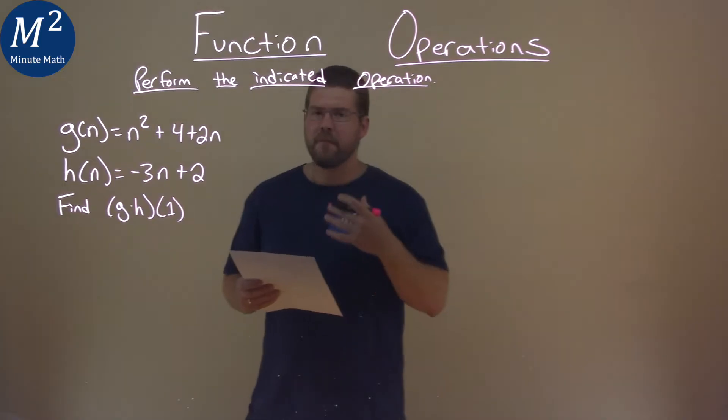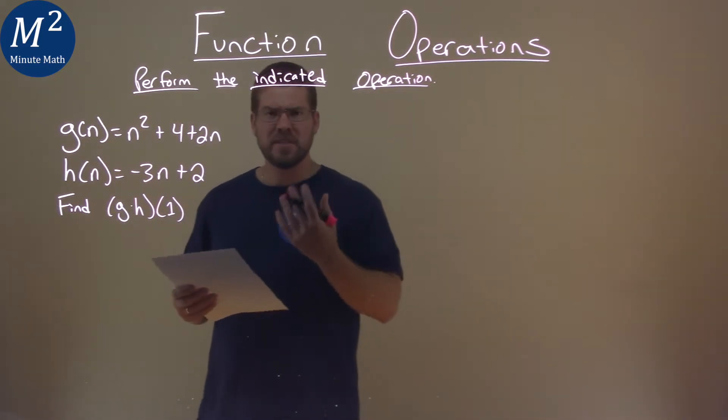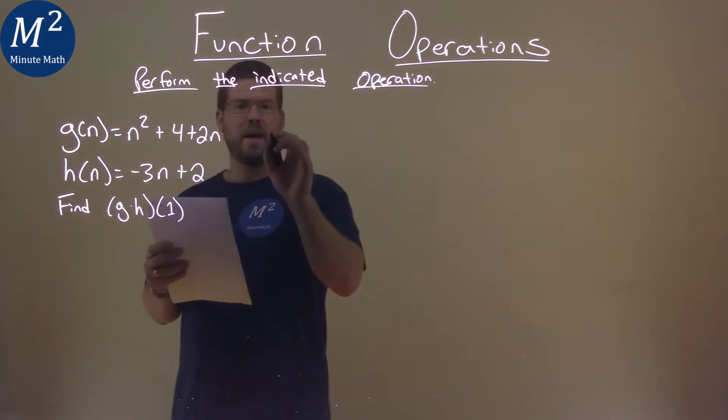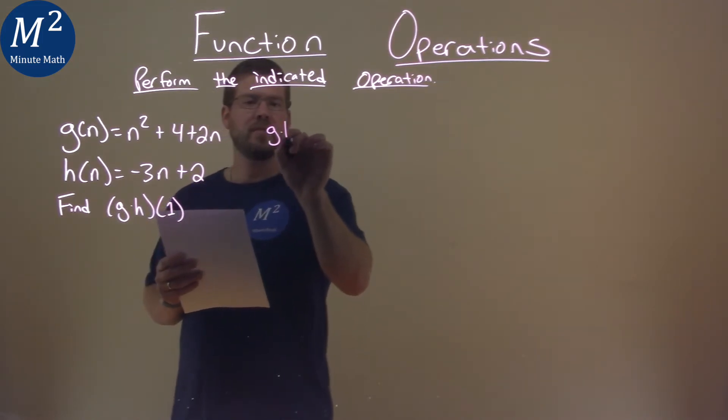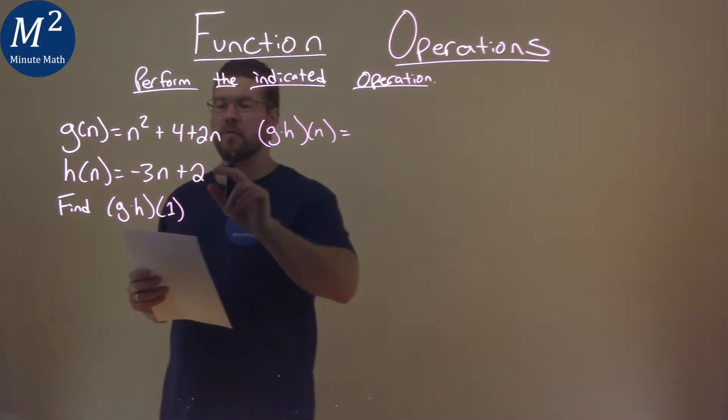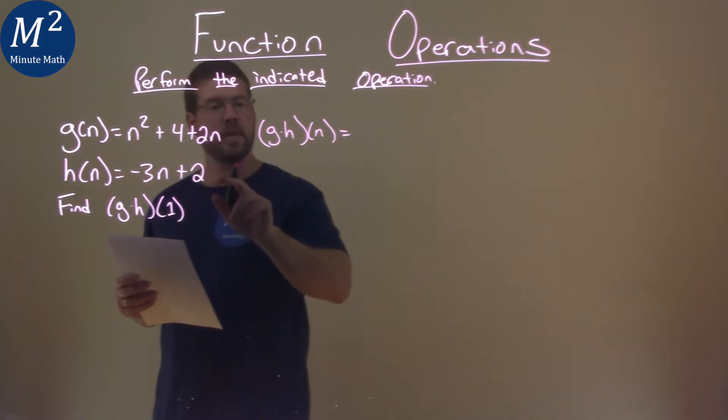So what we want to first do is set up what is g times h of n. So let's go do that. We have g times h of n is multiplying these two functions here g of n and h of n.